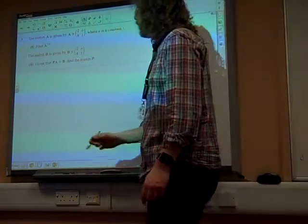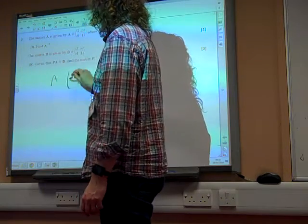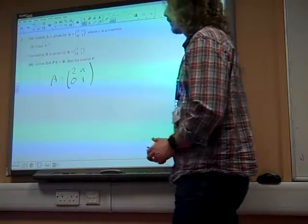Question 3. The matrix A is given by 2A... A is 2A0, 1, where A is a constant.